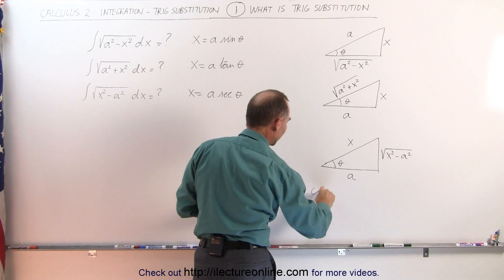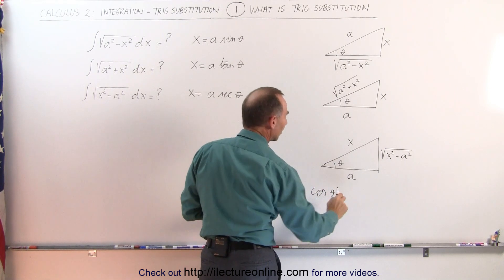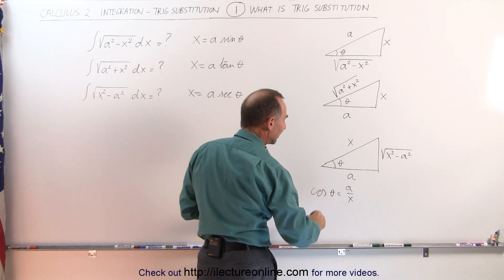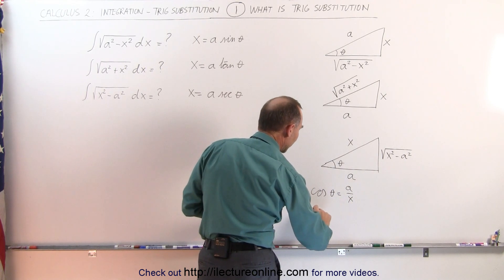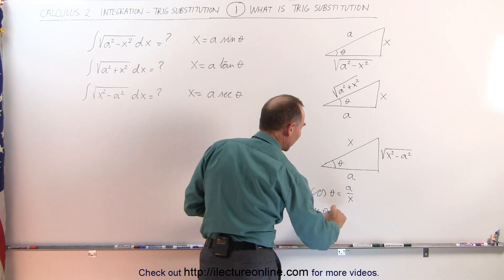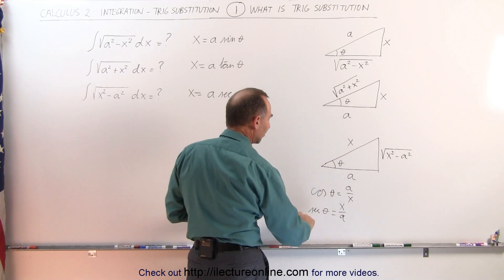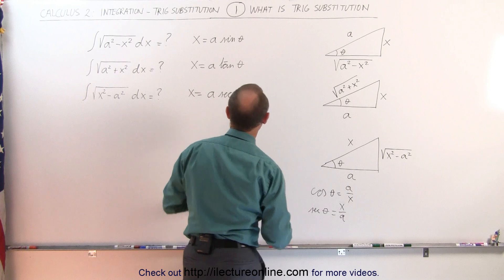and let's show that here, if we take the cosine of theta, that is equal by definition a divided by x. But the secant of theta is the inverse of the cosine, which is therefore x divided by a. Therefore x can be written as a times the secant of theta, which is what we have there.